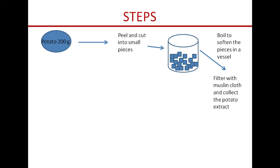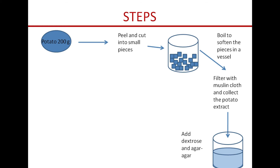After the pieces are soft enough, we filter with muslin cloth and collect the potato extract, discarding the potato pieces. To this extract we add dextrose and agar agar - if we are making one liter of PDA medium, 20 gram of dextrose and 20 gram of agar agar will be added.